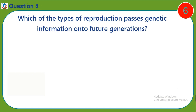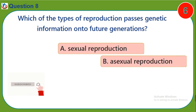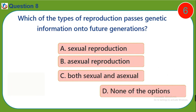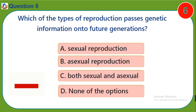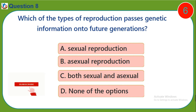Question eight: Which of the types of reproduction passes genetic information on to future generations? a) sexual reproduction, b) asexual reproduction, c) both sexual and asexual, d) none of the options.